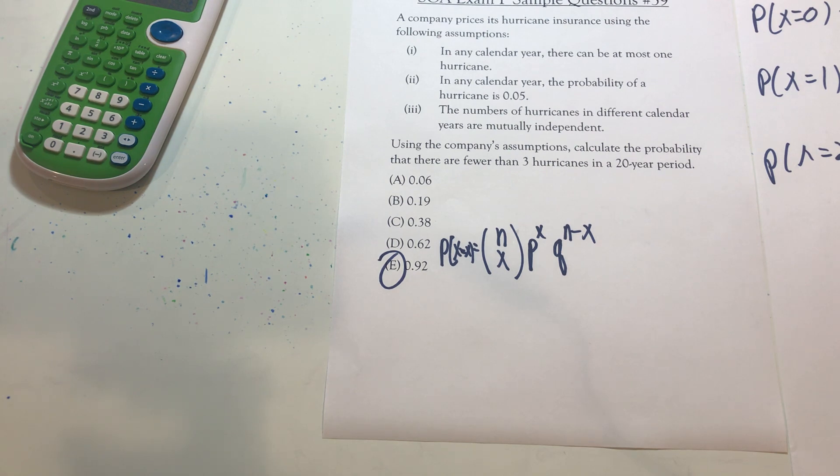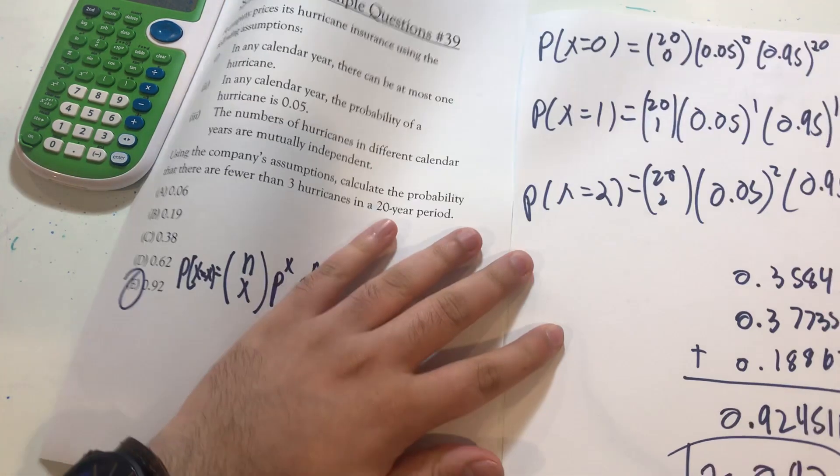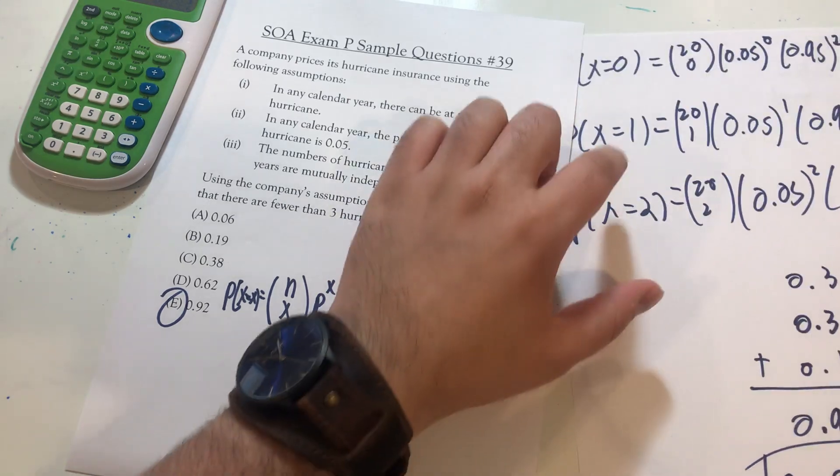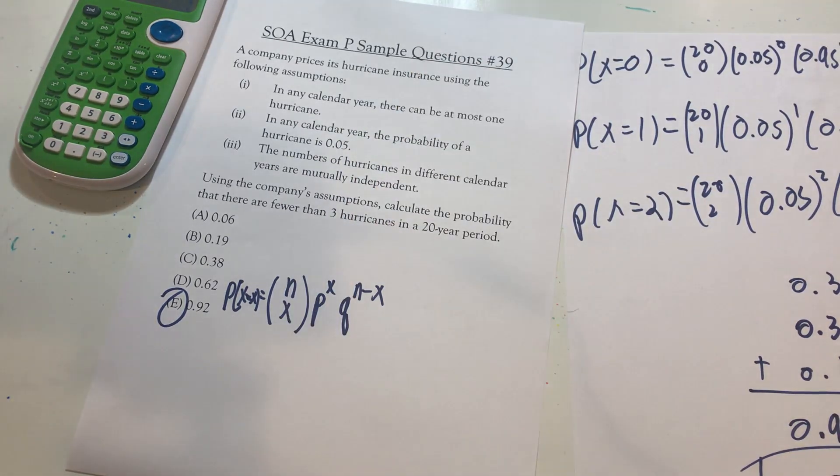I use it for all of the discrete situations it talks about, which in this case, fewer than three. These situations would be two hurricanes, one hurricane, zero hurricanes. And I add them up.